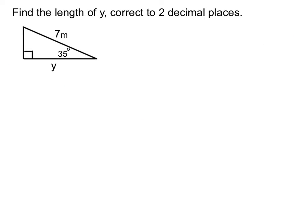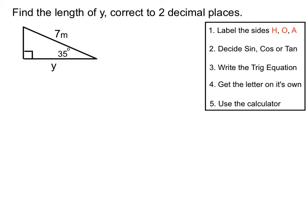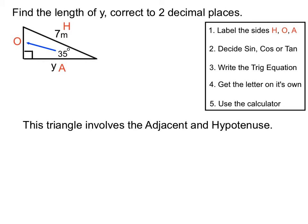Our second example has 7 metres — we want to find the length of y correct to two decimal places. The longest side, 7, is the hypotenuse. The opposite side of the triangle from the angle is on the left, and y on the base is in the adjacent position. So this question involves the adjacent and the hypotenuse.